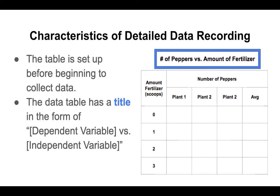The next part is the idea of a title. The title goes at the top and we always write it in the form of dependent variable versus independent variable. In this case, our dependent variable is the number of peppers and our independent variable is the amount of fertilizer. So our title is going to be: Number of Peppers vs. Amount of Fertilizer. Remember, it's always dependent variable versus independent variable.